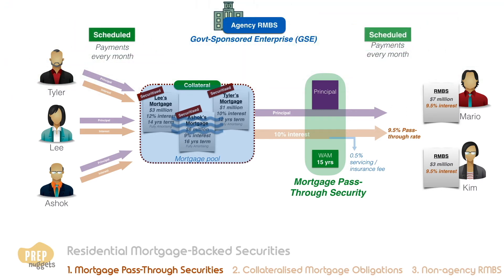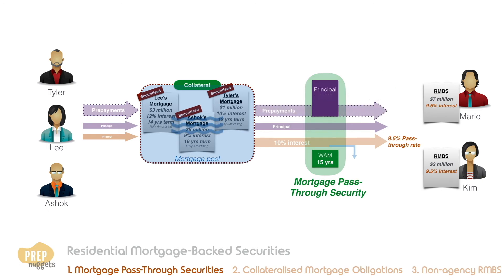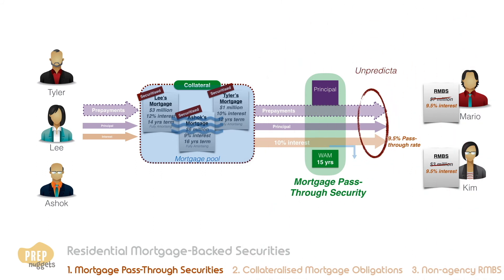What we have here are payments that are scheduled. When payments simply go as scheduled every month, this RMBS behaves similarly to a fully amortizing bond with $10 million principal and 9.5% monthly coupon. However, that's not likely the case. The borrowers have the option of making prepayments at any time. This makes the future cash flows to the investors unpredictable. This is known as prepayment risk to the investors.